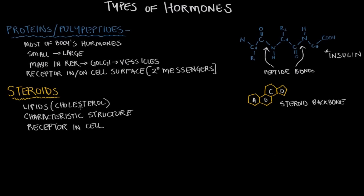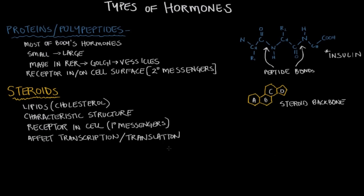Steroids usually go all the way inside the cell to signal their receptor as primary messengers — they're actually doing the signaling. Their receptors are located either in the cytoplasm or in the nucleus, and steroids typically affect the cell all the way down to the transcription and translation level of proteins, resulting in the production of new proteins and new products inside the cell. I'll do a separate video on how steroids affect the cell.